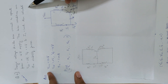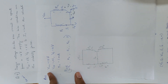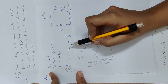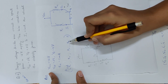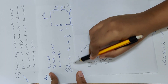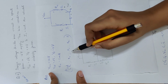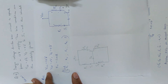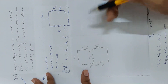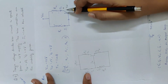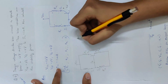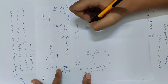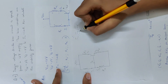We are going to find R1, R2, RC, RE, and calculate the stability factor. Now we are going to find the current values: IC, then IB, IE.